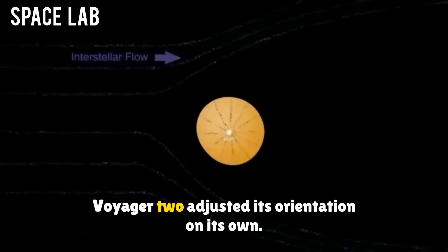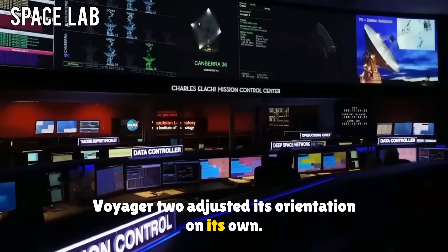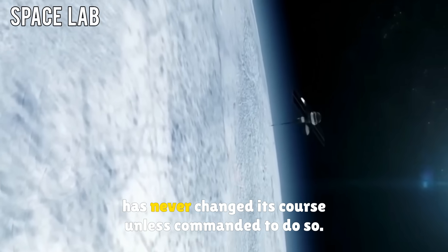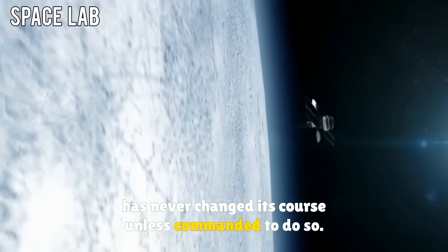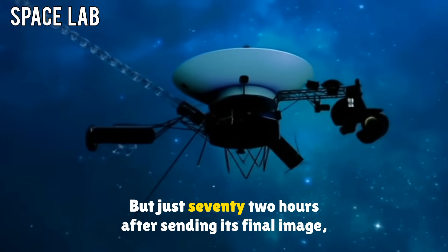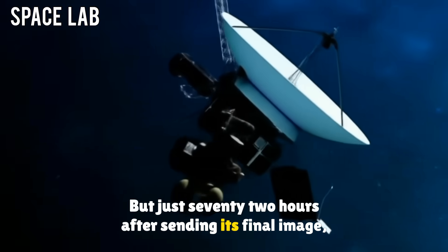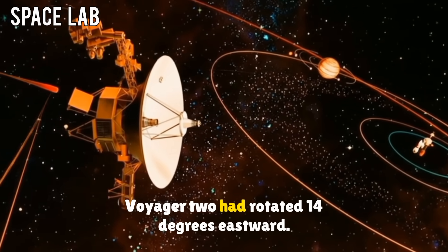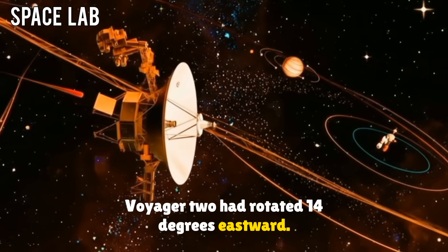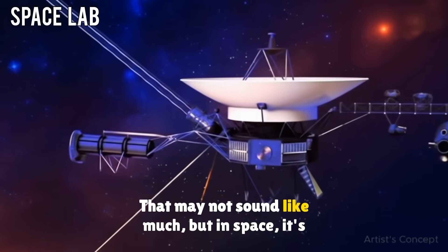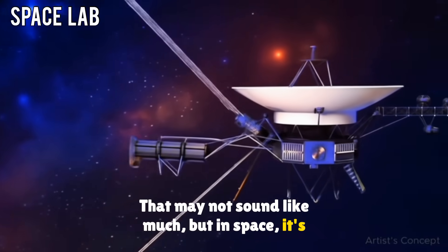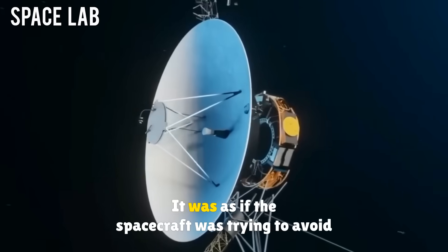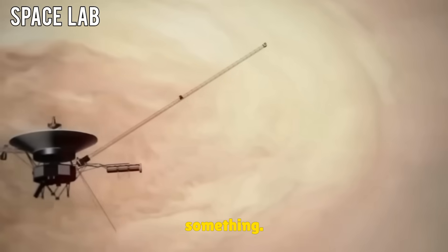Voyager 2 adjusted its orientation on its own. In the 45 years of its mission, Voyager 2 has never changed its course, unless commanded to do so. But just 72 hours after sending its final image, NASA detected an anomaly. Voyager 2 had rotated 14 degrees eastward. That may not sound like much, but in space, it's huge. No command was sent. No reason explained. It was as if the spacecraft was trying to avoid something.